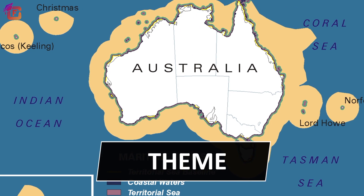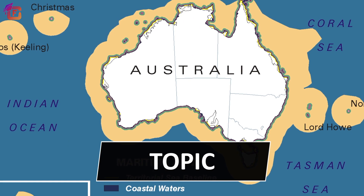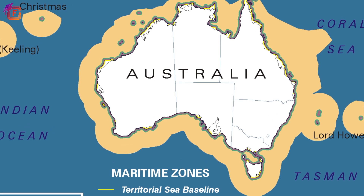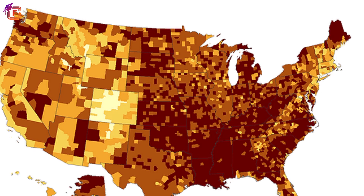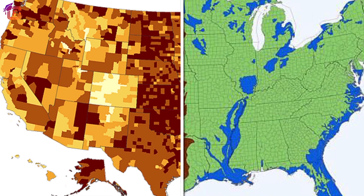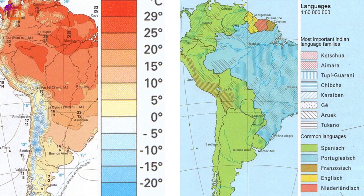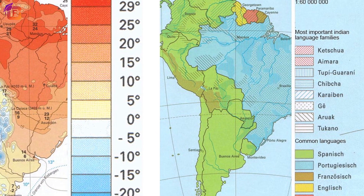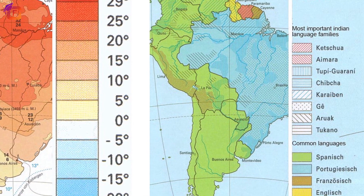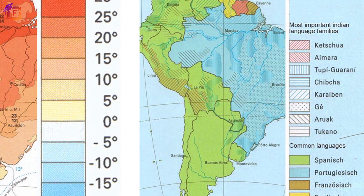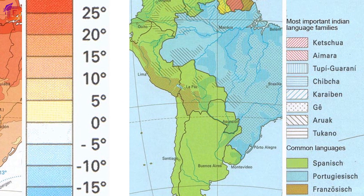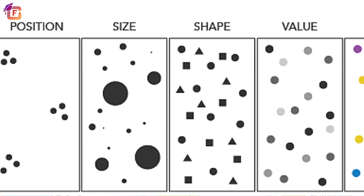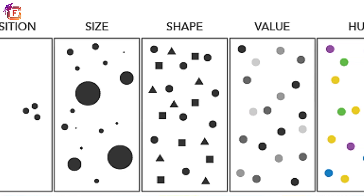Maps which are based on a theme or a topic are known as thematic maps. They are drawn to represent the distribution of human or natural features or data. The map's theme is layered onto the base map with the help of different mapping programs and technologies such as Geographic Information Systems or GIS.